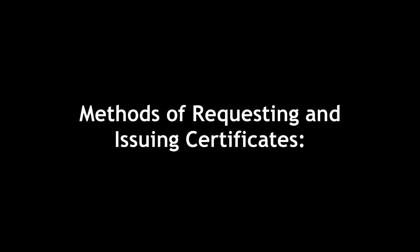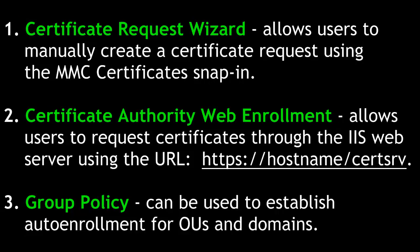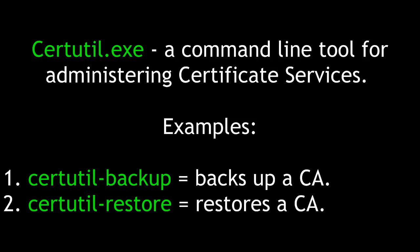Here are some methods of both requesting and issuing certificates. First, you might use the Certificate Request Wizard, which allows users to manually create a certificate request using the Microsoft Management Console Certificate Snap-in. Second, Certificate Authority Web Enrollment allows users to request certificates to the IIS web server using the URL HTTPS://hostname/certserver. Third, Group Policy can also be used to establish auto enrollment for OUs and domains. The CertUtil command line tool is also used for administering certificate services, with commands such as CertUtil-Backup to back up a CA, and CertUtil-Restore to restore a CA.